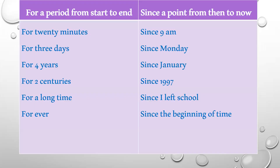To summarize: 'for' is used with a whole period of time — from the start to the end — such as 'for 20 minutes,' 'for three years,' 'for a long time,' or 'forever.' 'Since' is used for the starting point up till now — 'since 9 AM,' 'since Monday,' 'since January,' 'since 1997,' 'since I left school,' 'since the beginning of time.'